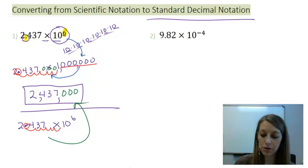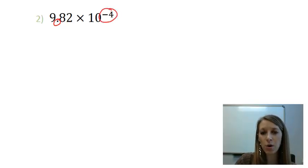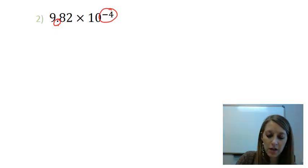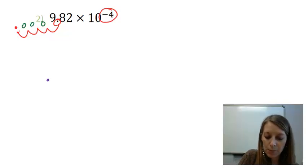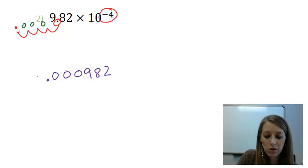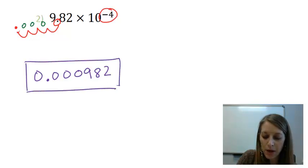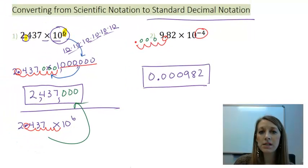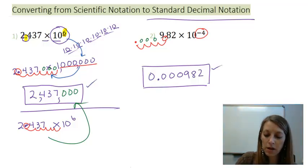Let's shift to example two. I'm going to skip the in-between steps and just move my decimal place. I have my decimal here, and I'm going to move it negative four units — meaning four units to the left. One, two, three, four — that's where my new decimal place goes. Each loop gets filled with the missing zero, giving us 0.000982. This reminds us that scientific notation helps with extremely large numbers and extremely small numbers, so we don't have to write out all those zeros.